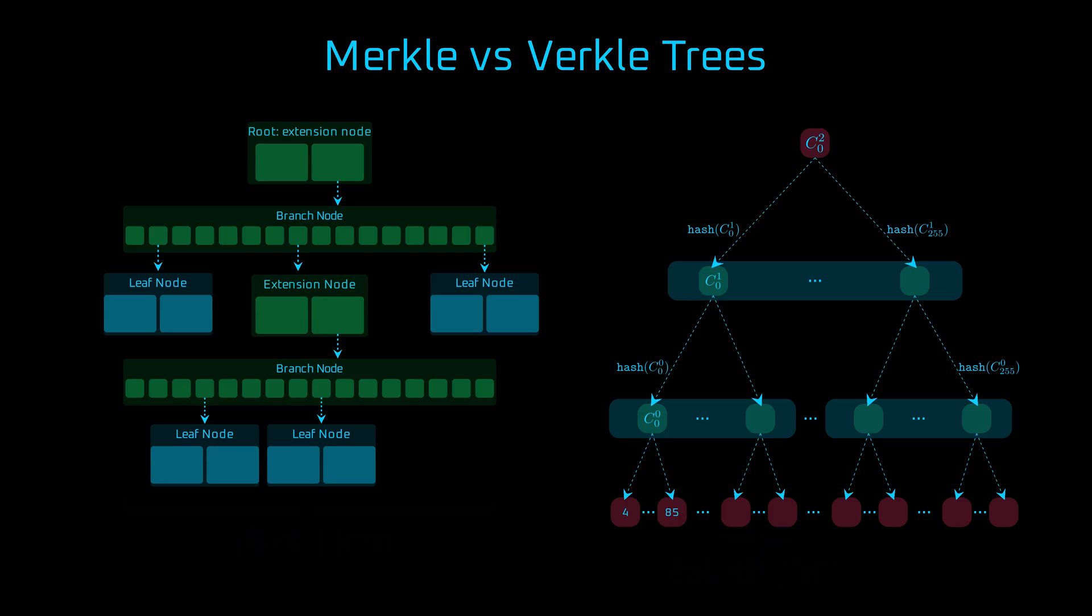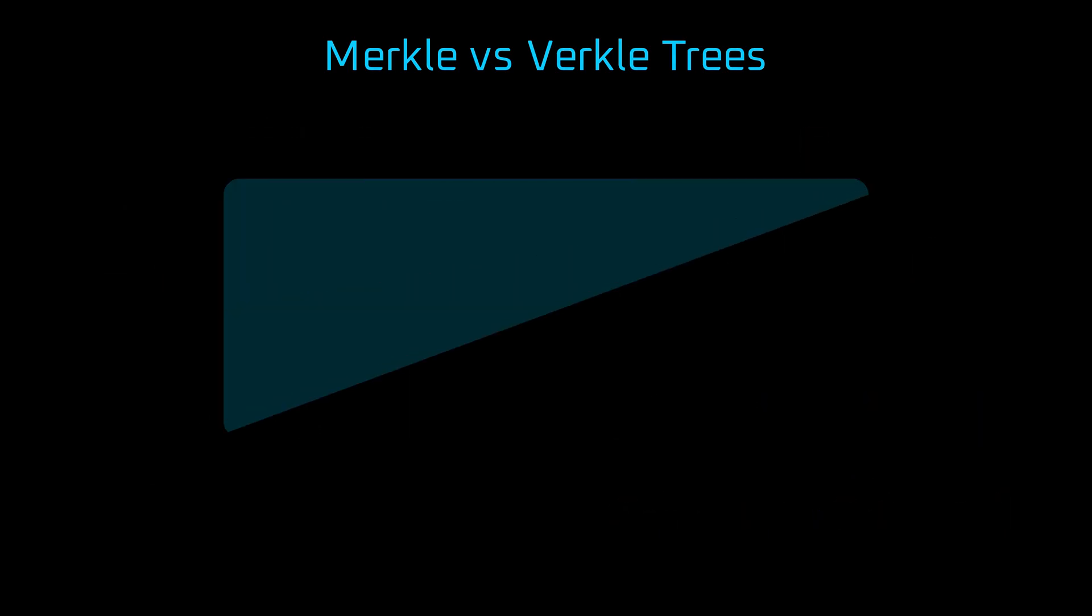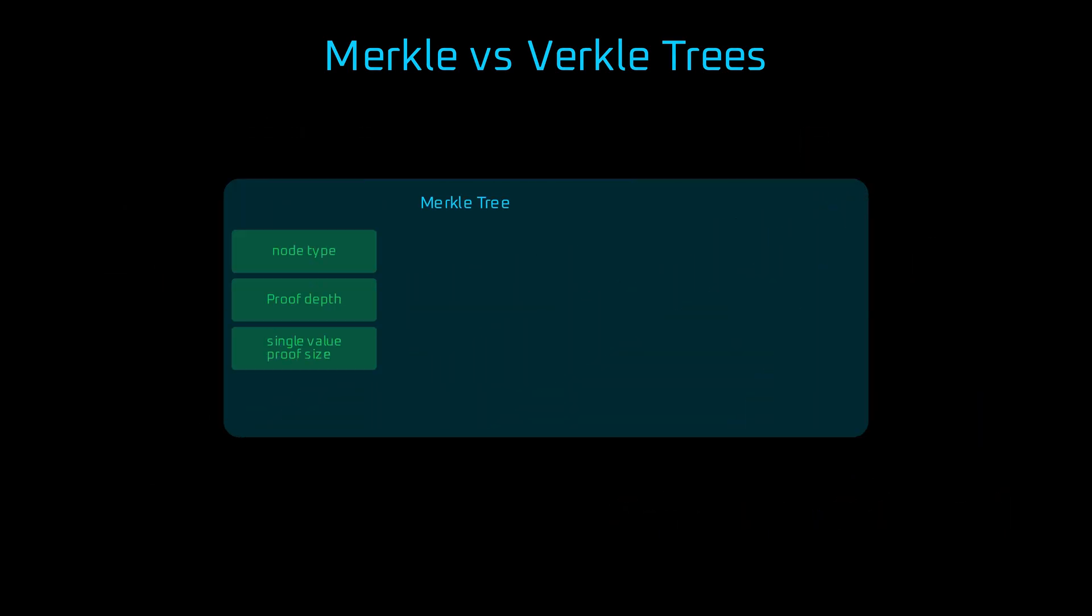What about proof sizes? A Merkle proof isn't tiny. To verify a single key, you might need to reveal up to 16 hashes per level, each 32 bytes. Multiply that across nine levels, and a single Merkle proof can be close to 4 kilobytes in size. Now, imagine proving 1,000 accounts. That adds up to almost 4 megabytes of data.